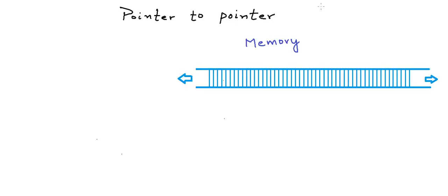Let us assume that this is a logical view of the computer's memory, and each partition here is one byte of memory. Now we know that each byte of memory has an address. We have drawn the memory horizontally here. Let us assume that the address increases as we go from left to right. So if this byte is at address 200, the next byte would be at address 201 and the next byte would be at address 202 and so on.